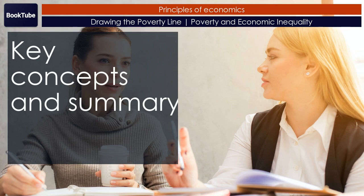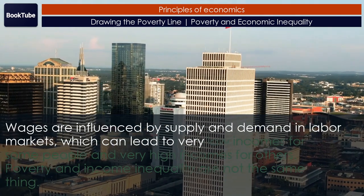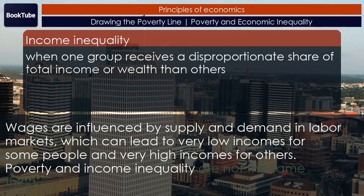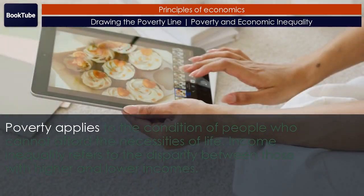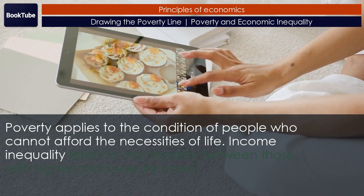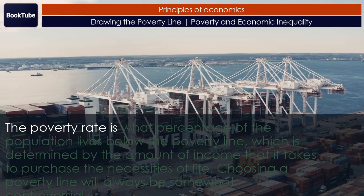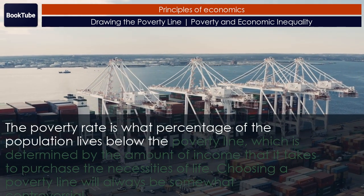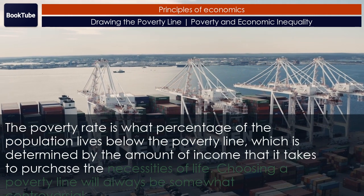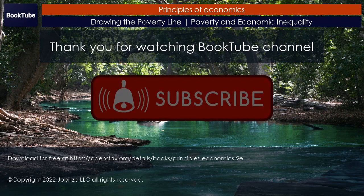Key concepts and summary: Wages are influenced by supply and demand in labor markets, which can lead to very low incomes for some people and very high incomes for others. Poverty and income inequality are not the same thing. Poverty applies to the condition of people who cannot afford the necessities of life. Income inequality refers to the disparity between those with higher and lower incomes. The poverty rate is the percentage of the population living below the poverty line, which is determined by the amount of income needed to purchase the necessities of life. Choosing a poverty line will always be somewhat controversial.